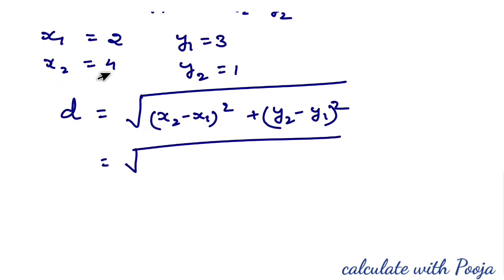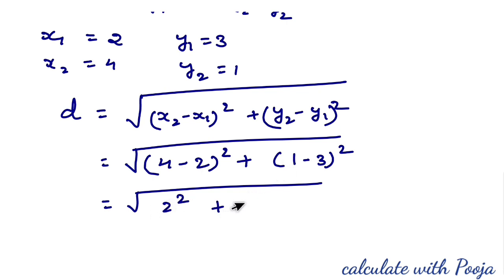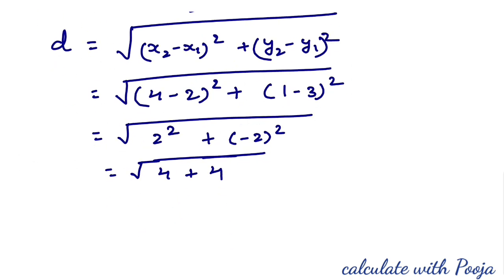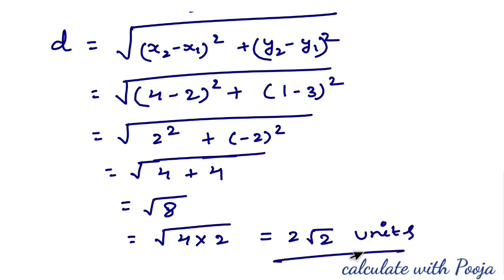Substituting: D = √((4−2)² + (1−3)²) = √(2² + (−2)²) = √(4 + 4) = √8 = 2√2 units. So the distance between the two points is 2√2 units.